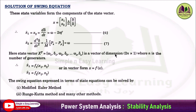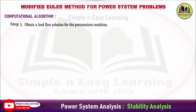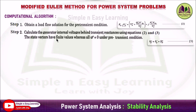The swing equation expressed in terms of state equations can be solved using the modified Euler's method, or the Runge-Kutta method, or many other methods available in stability analysis. Now we will discuss the modified Euler method for power system problems. The computational algorithm: step 1 — obtain a load flow solution for the pre-transient condition. Step 2 — calculate the generator internal voltage behind the transient reactance using equations 2 and 3.